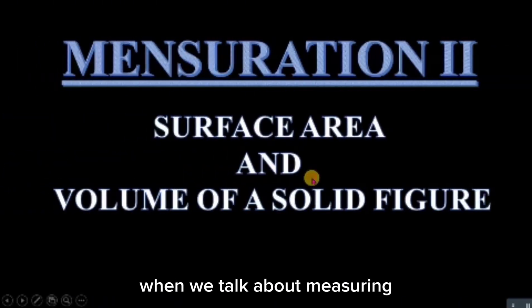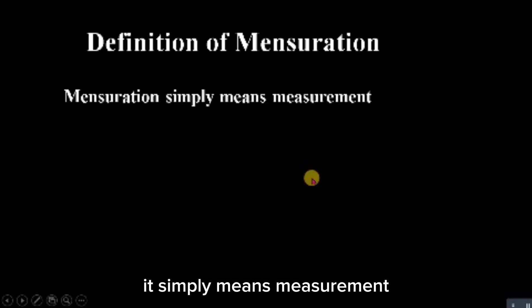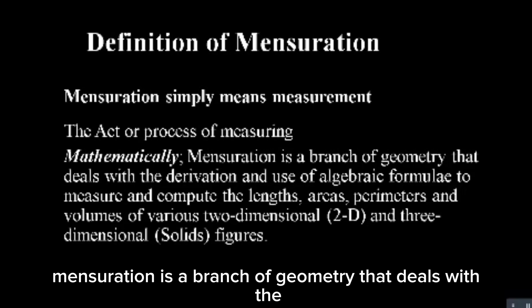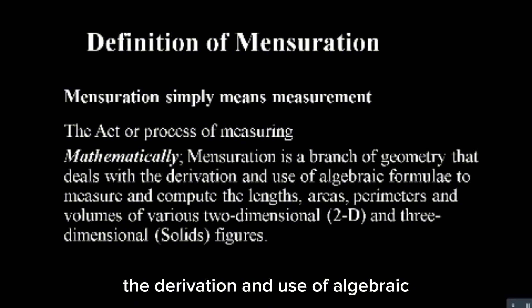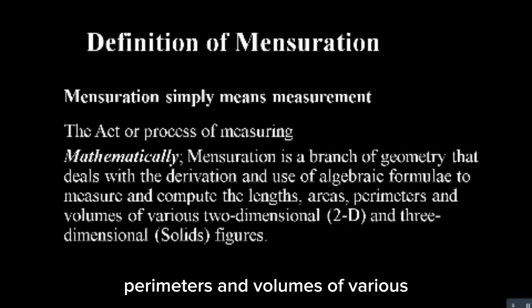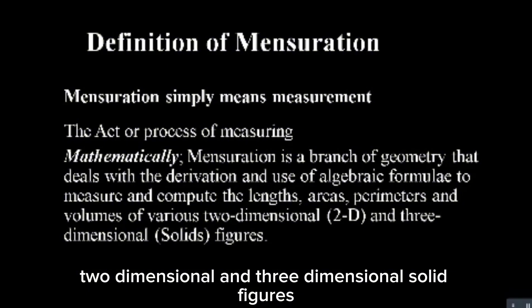Welcome to my channel. This is your man Alam, and today we are going to dive into Mensuration 2 — that's surface area and volume of solid figures. Mensuration simply means measurement: the act or process of measuring. Mathematically, mensuration is a branch of geometry that deals with the derivation and use of algebraic expressions and formulae to measure and compute length, area, perimeters, and volumes of various two-dimensional and three-dimensional solid figures.